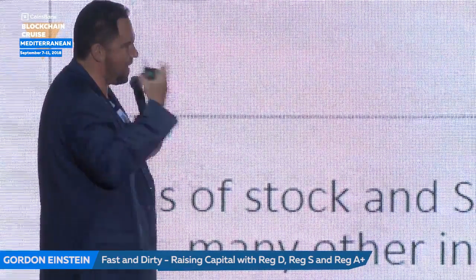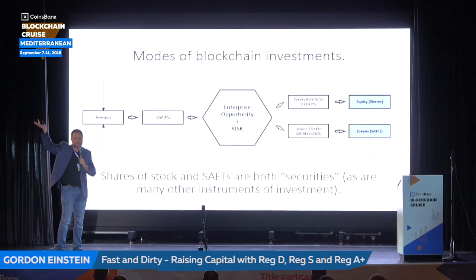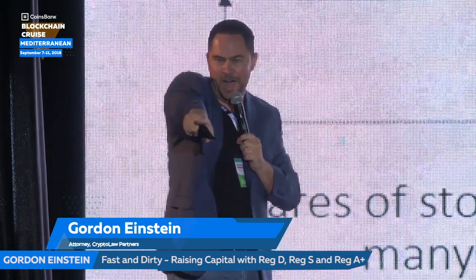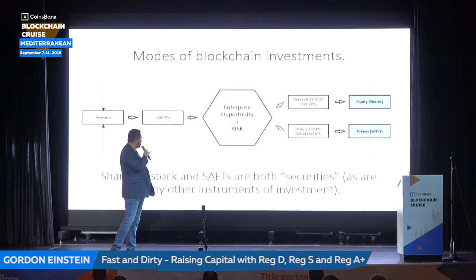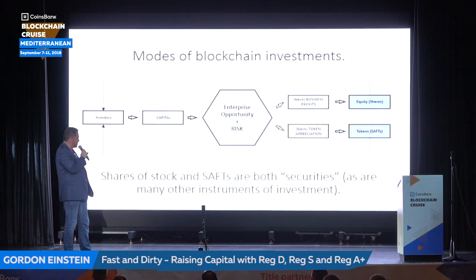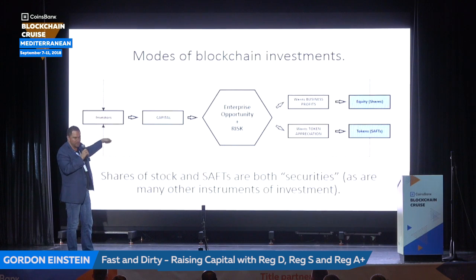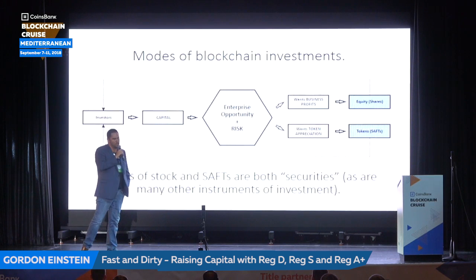There are two modes when it comes to investors putting money into blockchain startups. The old days of just buying tokens or SAFTs are kind of gone. A SAFT is a simple agreement for future tokens — investors give money to a company so it can build its operations, and rather than getting stock or equity back, they get a promise to receive tokens once the platform is built, with the idea that they can resell their tokens for a profit. It's based on an earlier agreement called a SAFE — simple agreement for future equity.